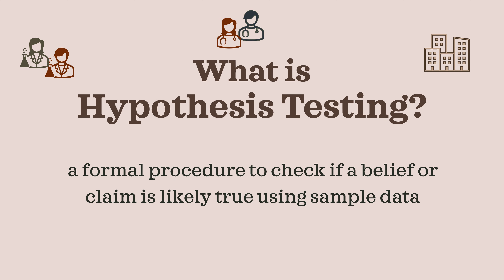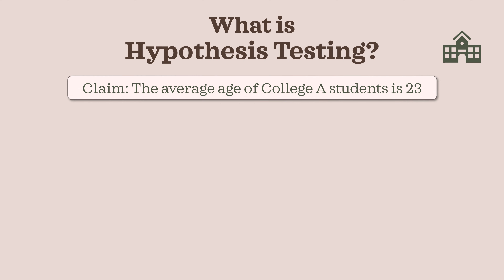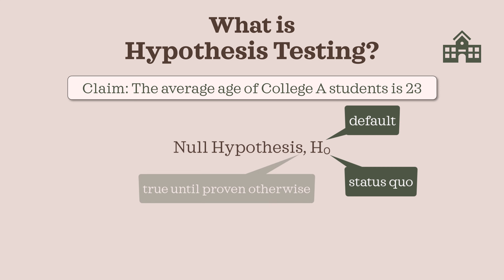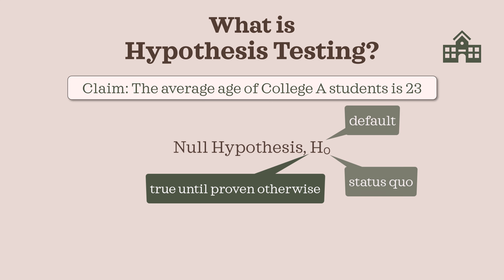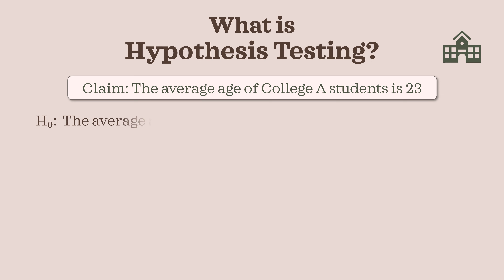Let's use a clear example. Suppose a local belief is that the average age of college A students is 23. We want to investigate this claim. In statistics, we set up two opposing statements. The first is the null hypothesis, H0. This is the default, the status quo — the claim we assume is true until proven otherwise. For this claim, the null hypothesis would be that the average age in the population is 23. That is, nothing interesting is happening, or the default claim is correct.